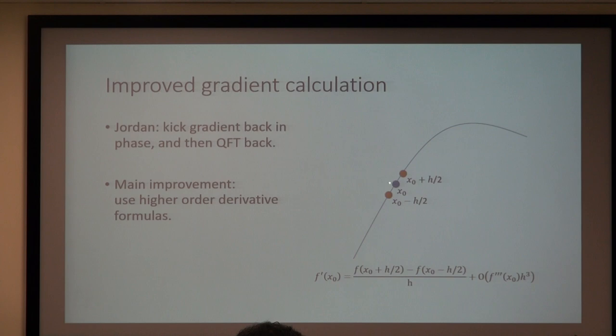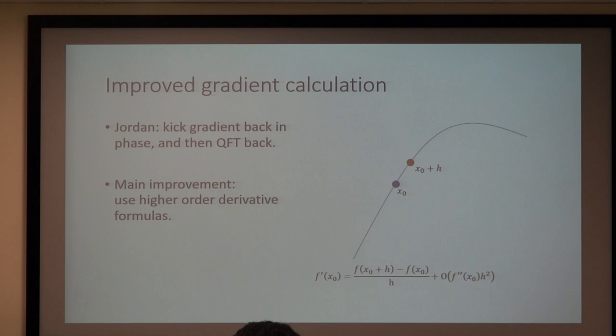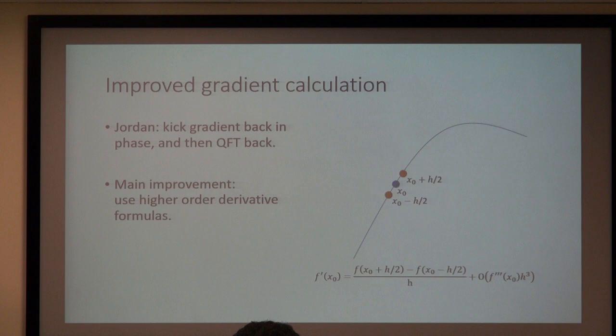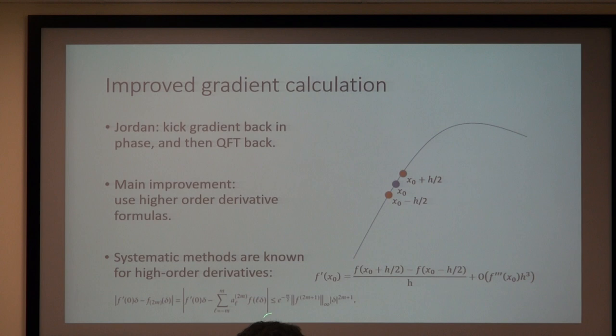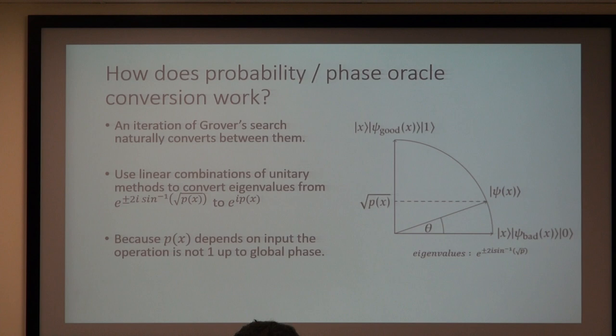The improved gradient descent calculation—part of the speedup comes from the following. If we're computing the gradient at each step and kicking back the phase, we need a good estimate of the derivative. The simplest way—basically how Jordan does it—is a forward difference formula: the derivative is [f(x+h) - f(x)] / h, with errors depending on the second derivative. But you can also use a centered difference formula, where the error goes like h cubed. And in general you can use higher-order formulas. We show that high-order derivative formulas give scaling that goes like h^{2m+1} for any m we choose—that's one of the key tricks.